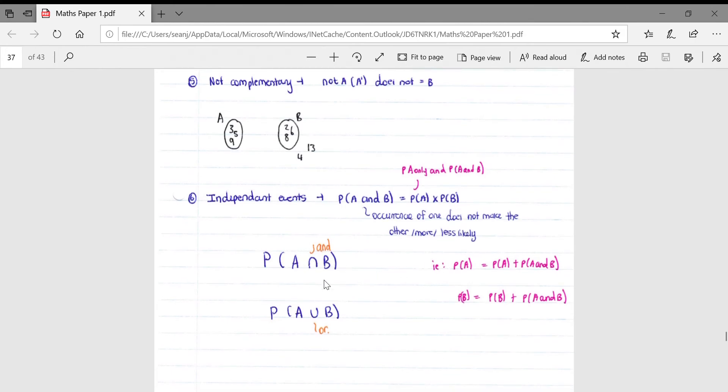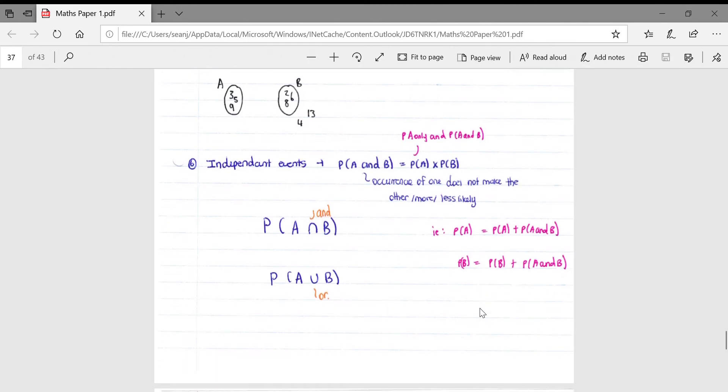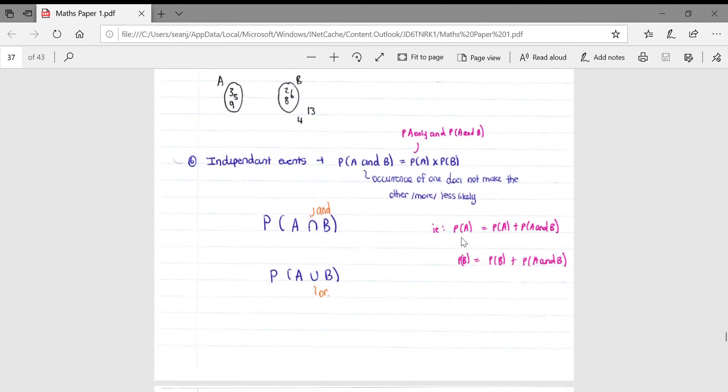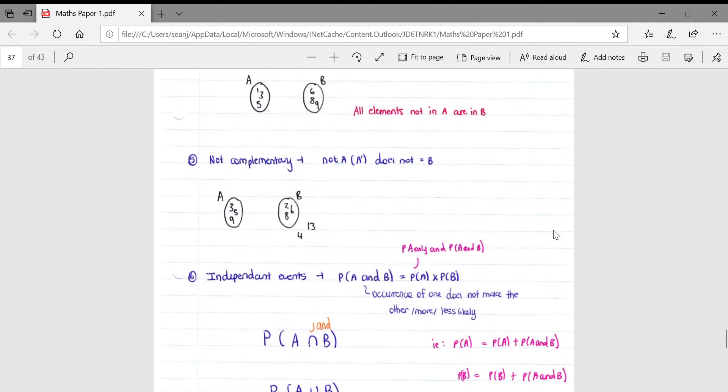And then just a quick bit of notation: probability of A and then like an n sort of thing B means probability of A and B. Probability of A and then a U sort of symbol and B, that U symbol is symbolic of or. Then just another bit of notation: probability of A is the probability of A and the probability plus the probability of A and B.